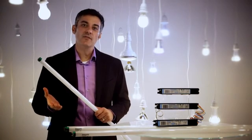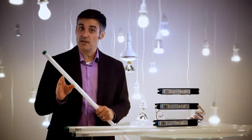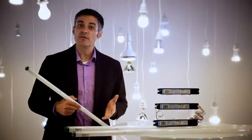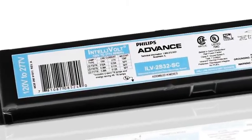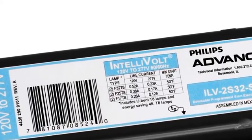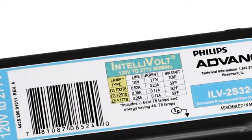To determine which kind of ballast you need to purchase to replace a current installation, first check out the label. Any existing ballast should have all of the information you need. The input voltage, lamp type, and the number of lamps it operates.